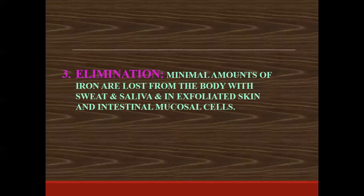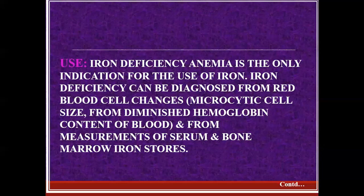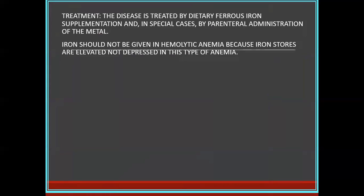Minimal amounts of iron are lost from the body with sweat, saliva, exfoliated skin, and intestinal mucosal cells. Iron deficiency anemia is the only indication for the use of iron. It can be diagnosed from red blood cell changes — microcytic cell size and diminished hemoglobin content of blood — and from measurements of serum and bone marrow iron stores. The disease is treated by dietary ferrous iron supplementation or, in special cases, by parenteral administration. Iron should not be given in hemolytic anemia because iron stores are elevated, not depressed, in this type of anemia.